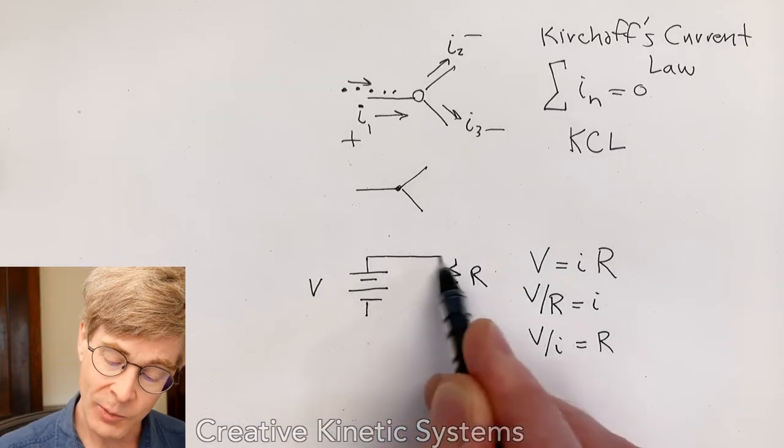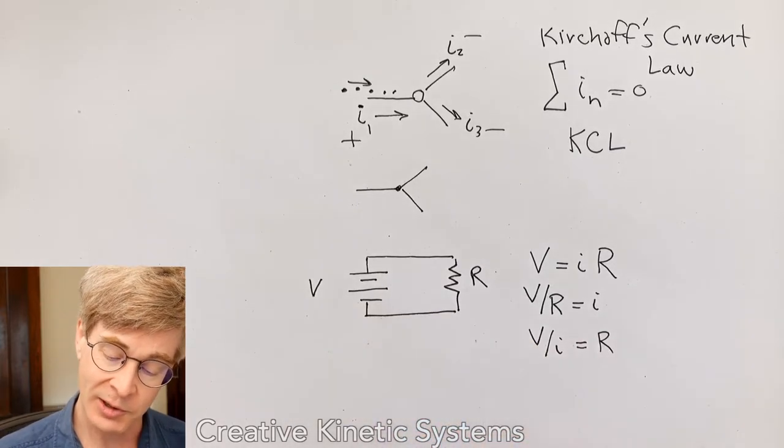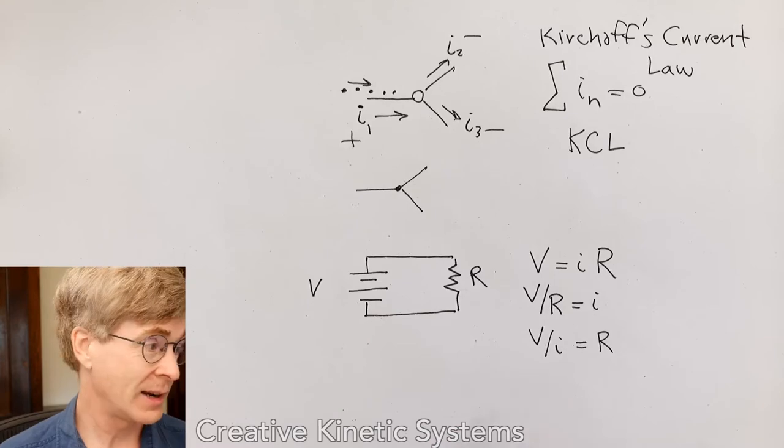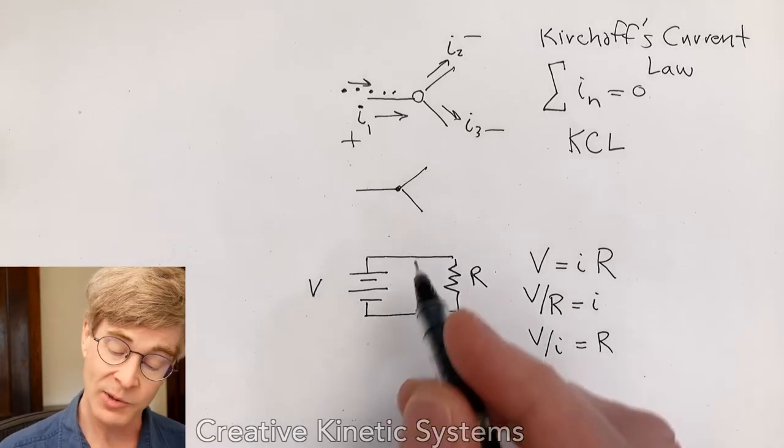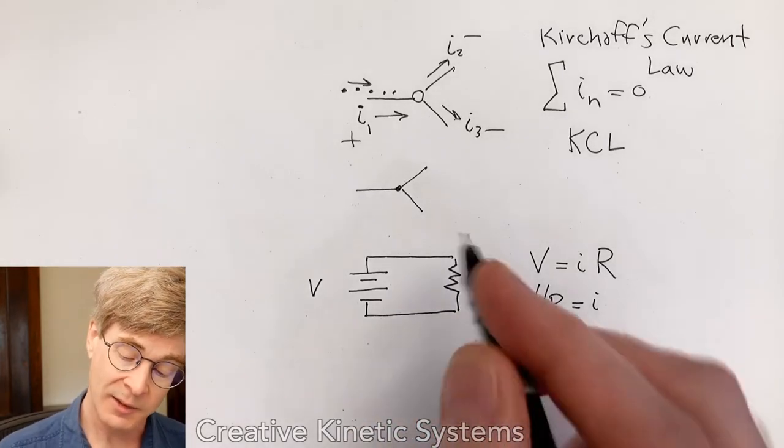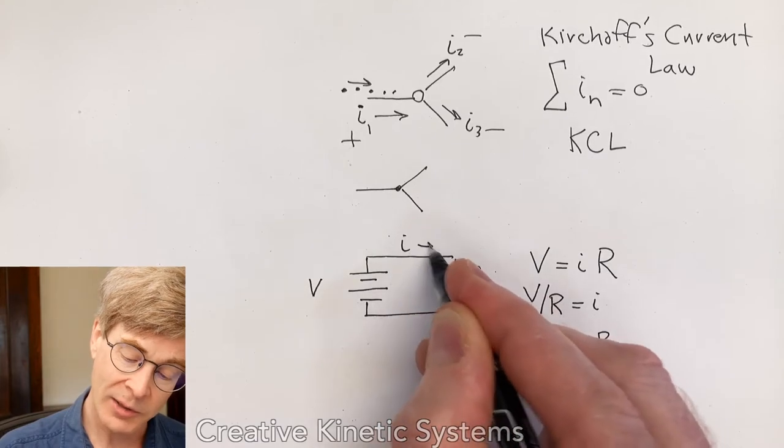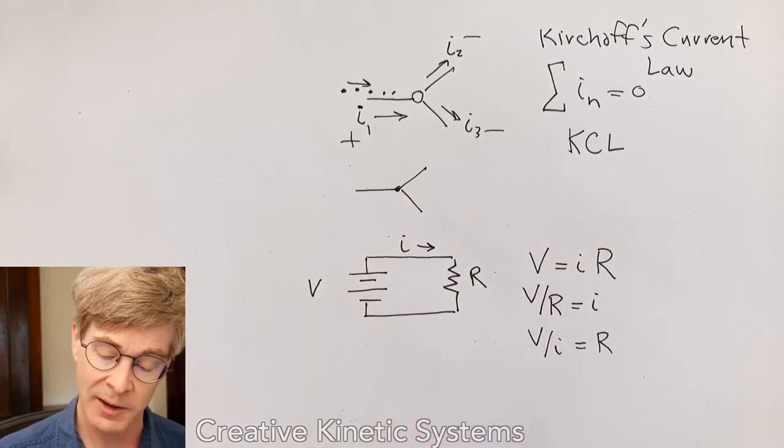So in our circuit here, we can think about the voltage across the resistor as coming from the battery, and it's an idealized battery here, so it's going to have some constant voltage. And we're going to get a current in the wire, and then these are the relationships that express that.